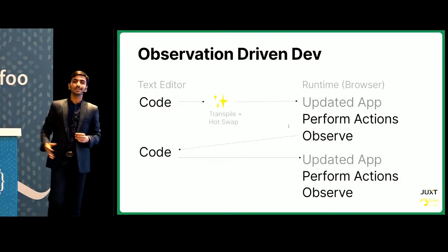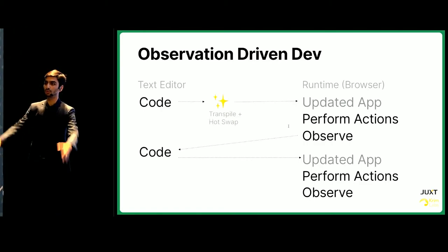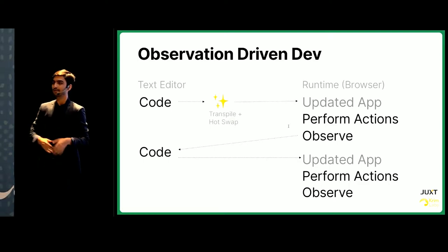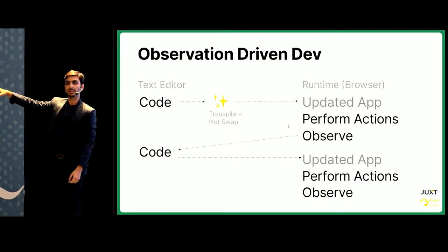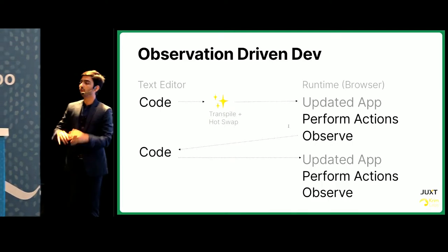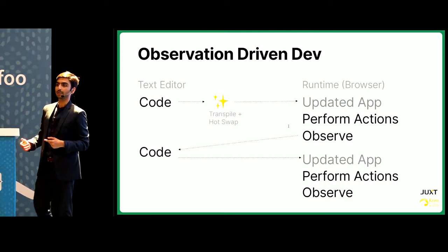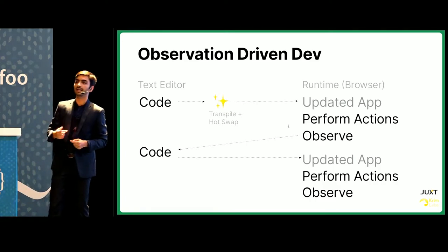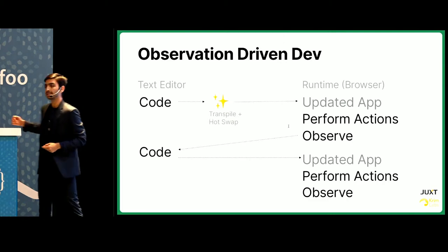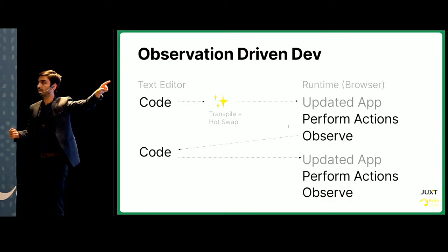What we currently do as JavaScript developers can be termed observation-driven development. You have a feature to build, you write some code, your transpiler updates the application in the runtime, you perform some actions — maybe fill a form — and you observe what is happening. If it was fine, you move to the next feature; otherwise you go back and fix it. The cycle continues between two environments: your text editor and your runtime, your browser.